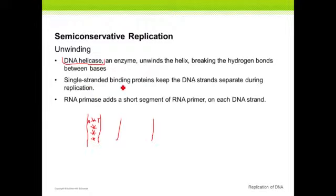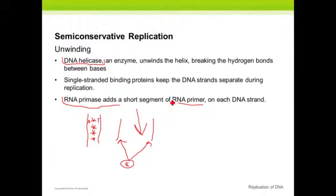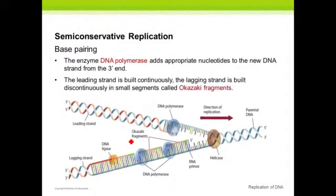Then single-stranded proteins come in and keep the DNA strands separate during replication, preventing the two strands from reattaching. Next, another enzyme called RNA primase adds a short segment of RNA primer to each end of the DNA. RNA is just an alternative version of DNA — structured a little differently, but used in DNA replication and in making proteins. These RNA primers attach to the DNA, and then another molecule comes in for the base pairing step.